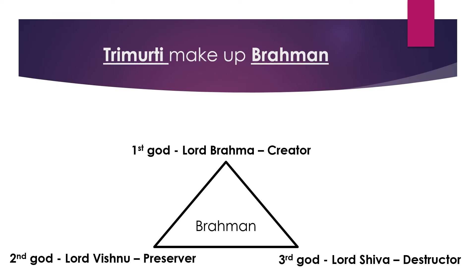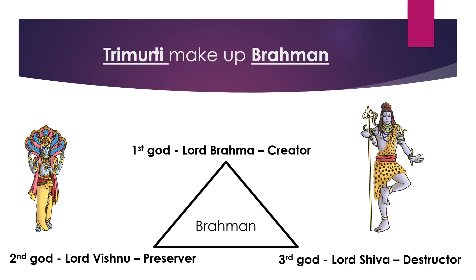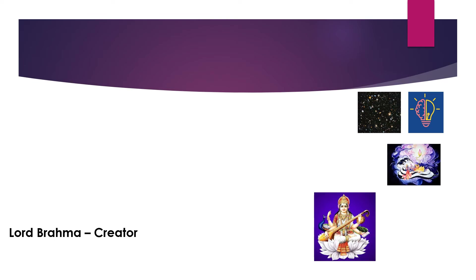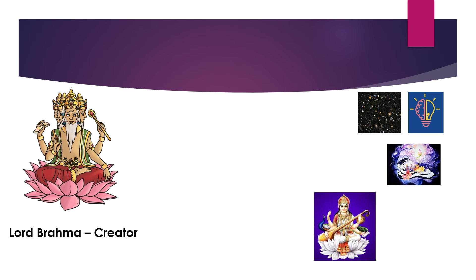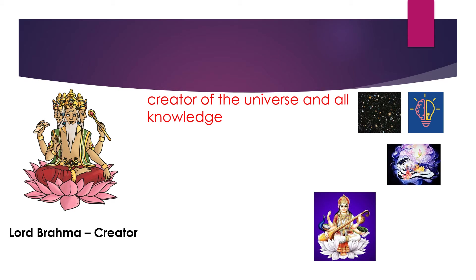One of the forms is Lord Vishnu, and he is the preserver. One of the forms is Lord Shiva, the destructor. And another of the forms — the main form — is Lord Brahma, which is the creator. Lord Brahma is the creator of all of the universe and all knowledge. Hindus believe that Lord Brahma created everything in the universe and everything that you know.